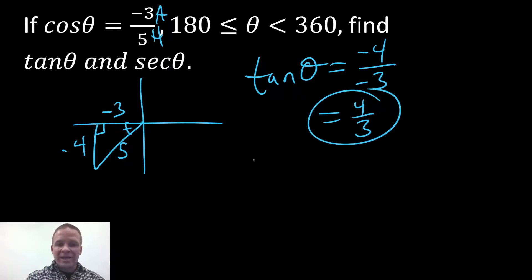And then I can get secant of theta in the same fashion. SOH-CAH-TOA, secant is hypotenuse over adjacent. It's actually the reciprocal of cosine.